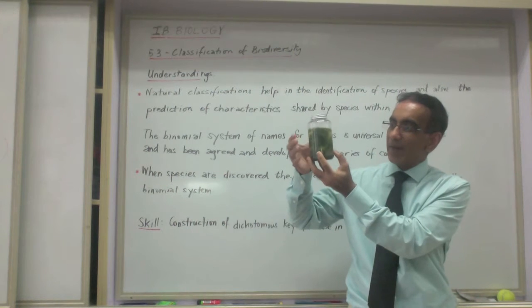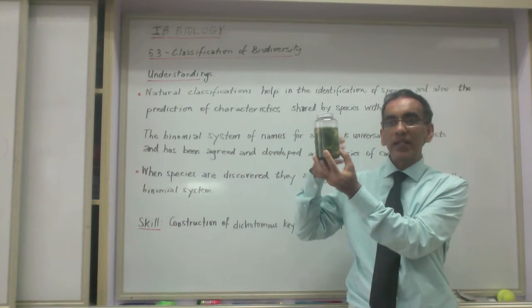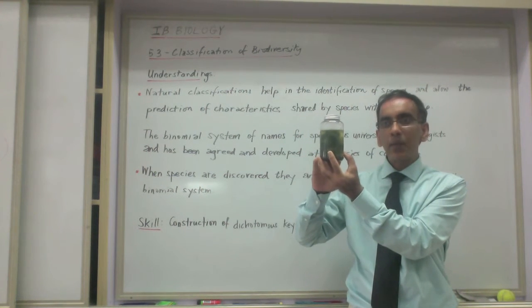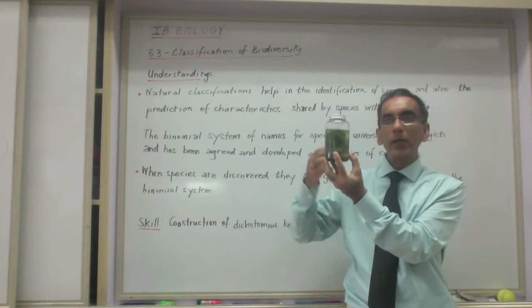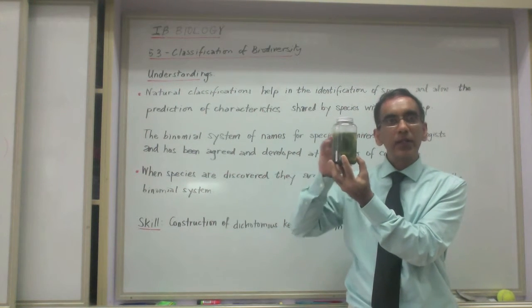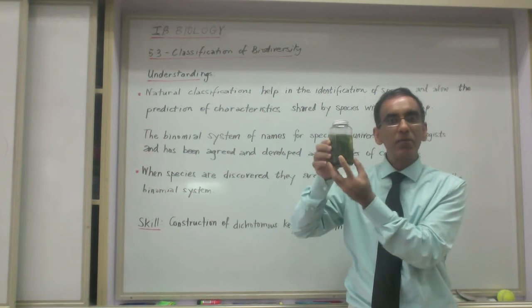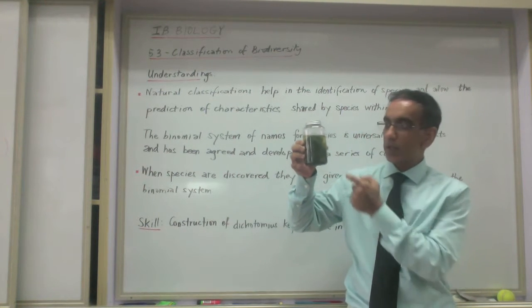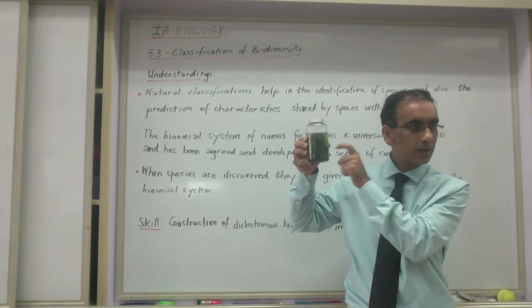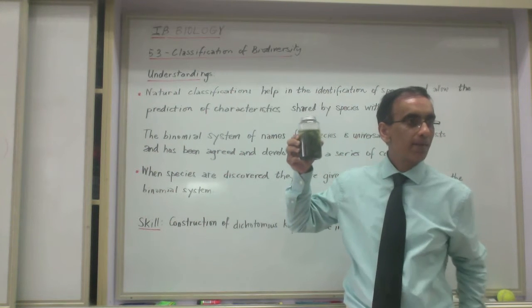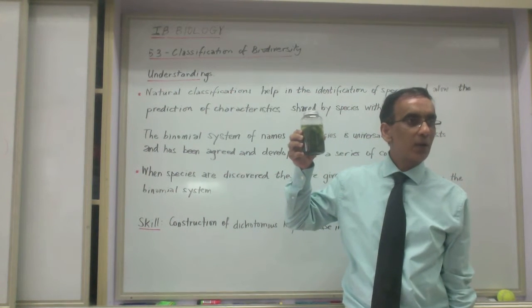Today, we want to see how scientists go about in their scientific way to identify things and how a layperson might go about today in the 21st century trying to identify this. The layperson meaning you guys, which you're not really laypeople because you guys already know that this is what? What's the green scum? What's the green scum called, Anna?